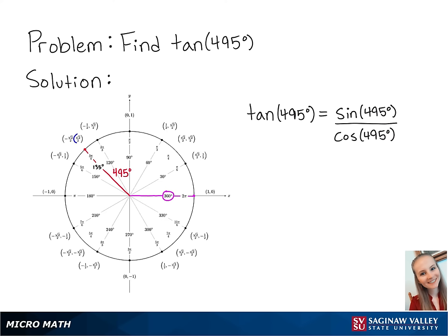Sine correlates to the y-coordinate on the unit circle. So sine of 495 degrees is equal to the square root of 2 over 2. Cosine correlates to the x-coordinate on the unit circle. So cosine of 495 degrees is equal to negative square root of 2 over 2.